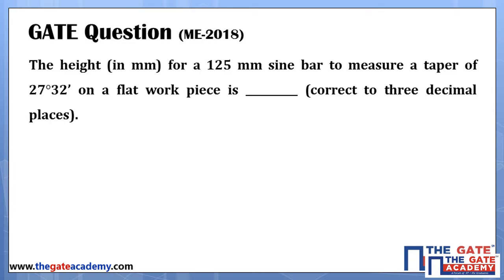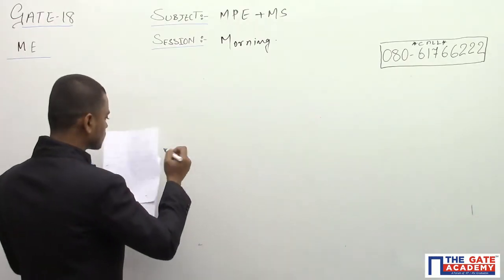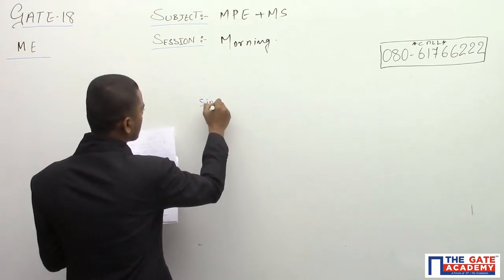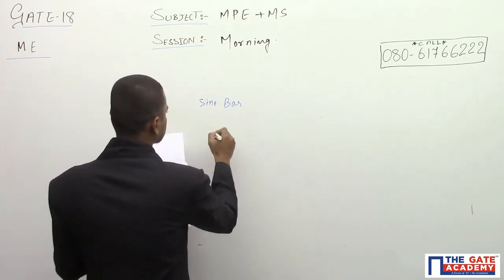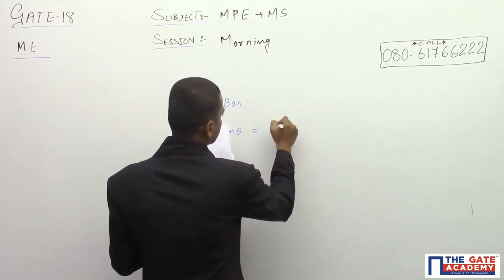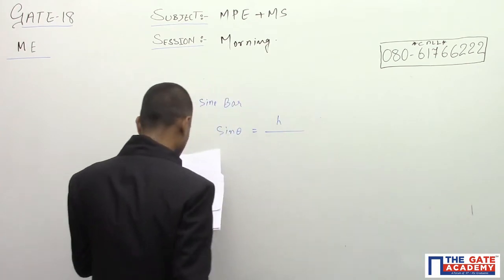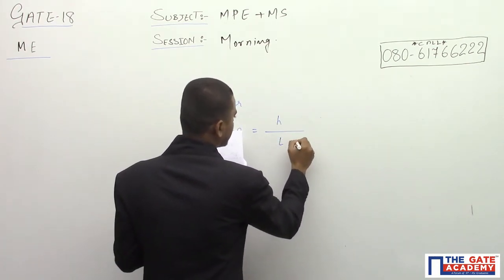We have to find out the height. For sine bar, sine theta equals H upon L, where L is given as 125 mm and theta is the angle.